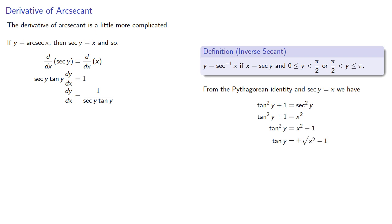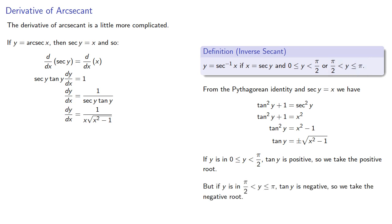And here's the problem. If y is between 0 and pi halves, tangent y is positive, so we take the positive root. But if y is between pi halves and pi, tangent y is negative, so we take the negative root. And so our derivative for arcsecant has two possible values.